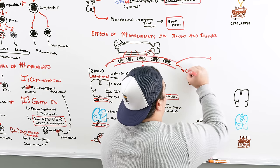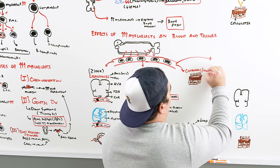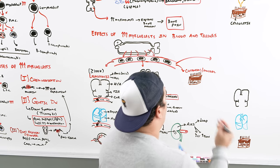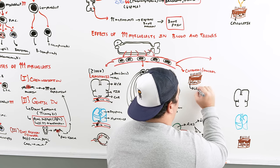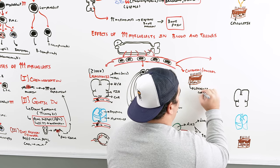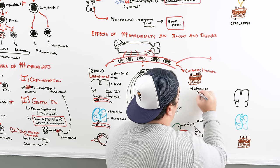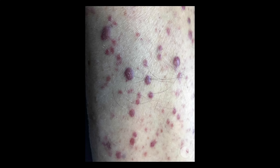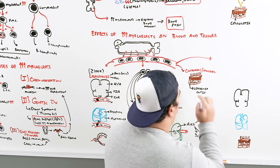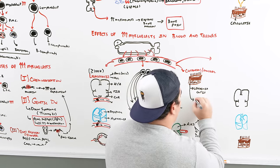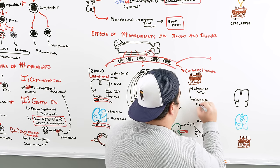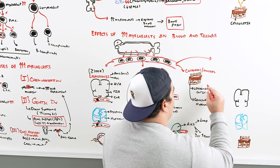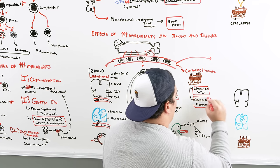Myeloblasts can also cause cutaneous and mucosal manifestations. When they deposit into the skin, this can cause something called leukemia cutis — take a look at that picture. They can also deposit into the mucosa of the gingiva and cause gingival hyperplasia. These are two big cutaneous and mucosal manifestations to watch out for.